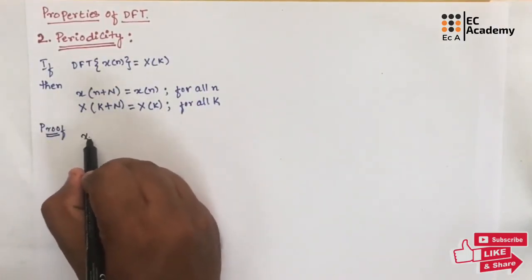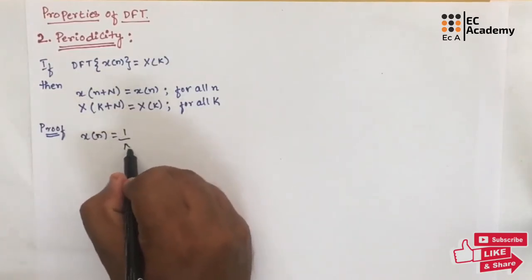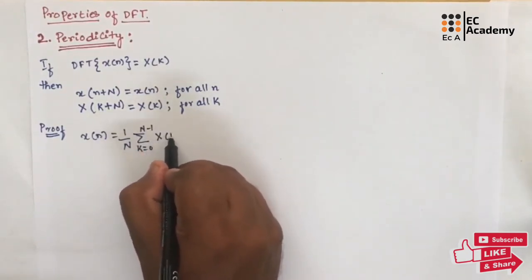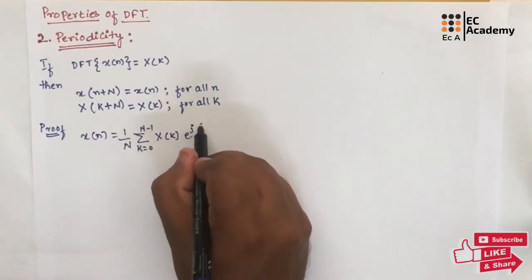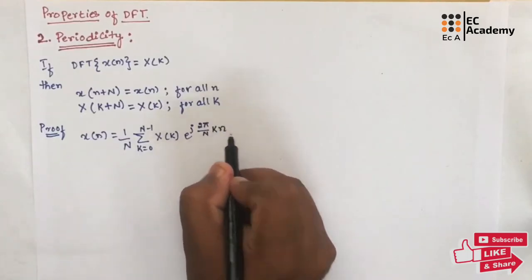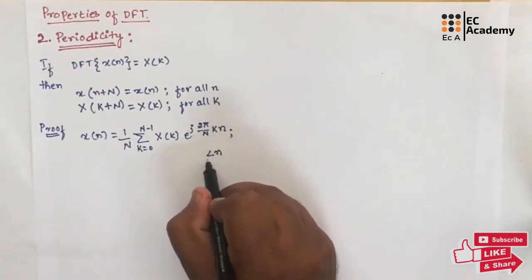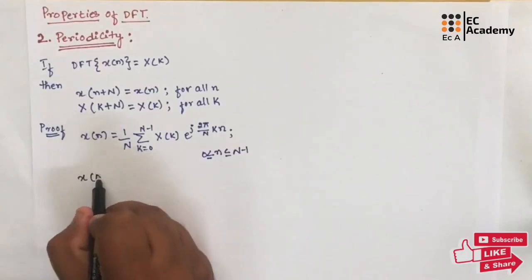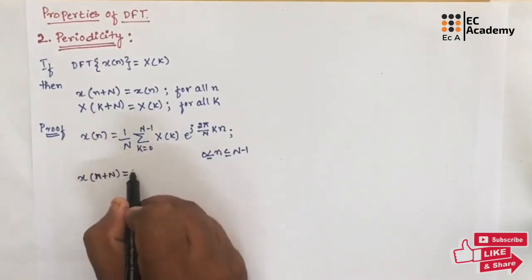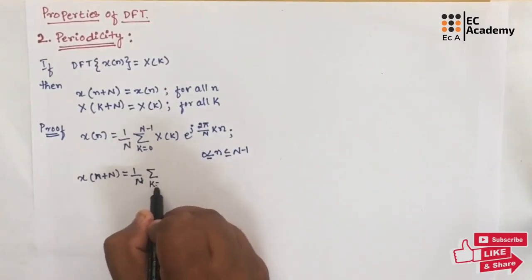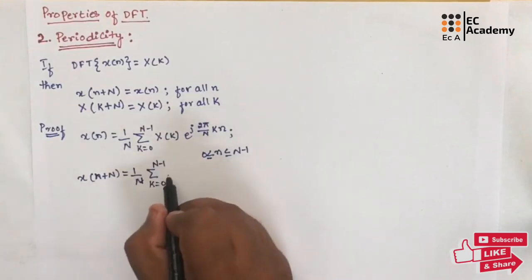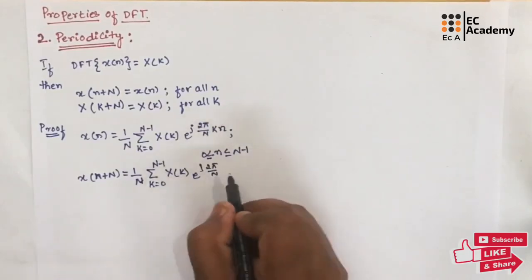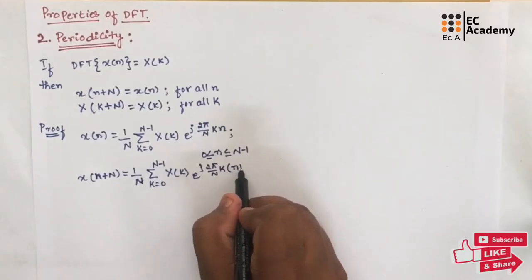Let us do the proof. We know x(n) = (1/N) summation from k = 0 to N−1 of X(k) · e^(j2πkn/N). Now let us take x(n + N). For this, we can write it as (1/N) summation from k = 0 to N−1 of X(k) · e^(j2π/N · k · (n + N)).